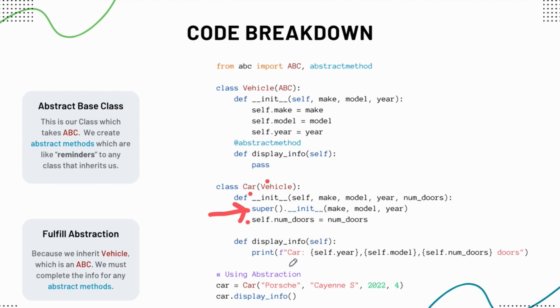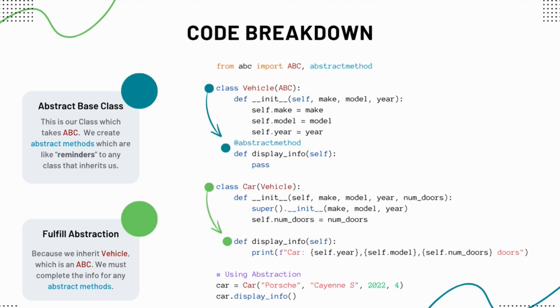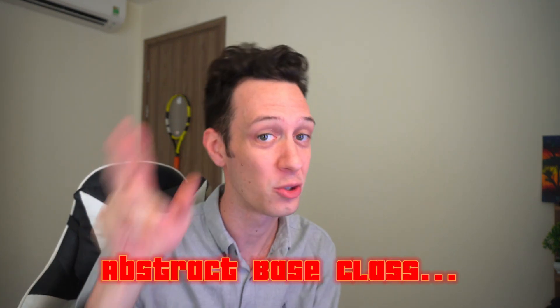Down here I have a class Car that inherits Vehicle. We initialize everything, pass it down, and add a new property — number of doors. Then we complete the display_info method. By importing our ABC and abstract method, we enforce that display_info must be completed. Any class that inherits Vehicle must complete that abstract method. The abstract base class acts as a reminder: use me, but complete my functions.